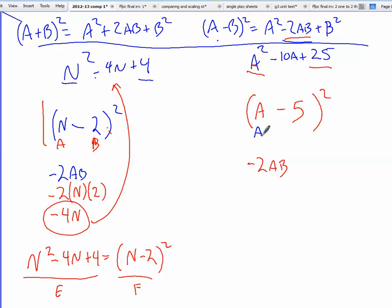My a term is right here. Happens to be a. Our b term is here. So let's plug it in. Negative 2. Our a term is a. Our b term is 5.